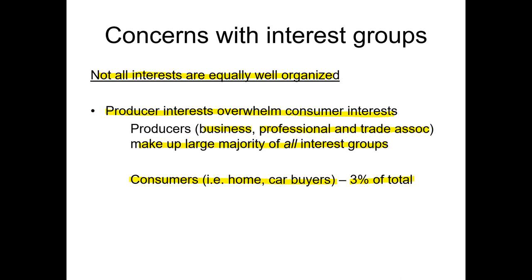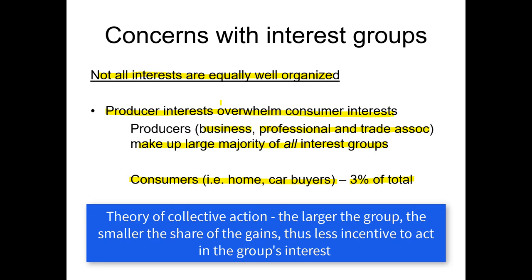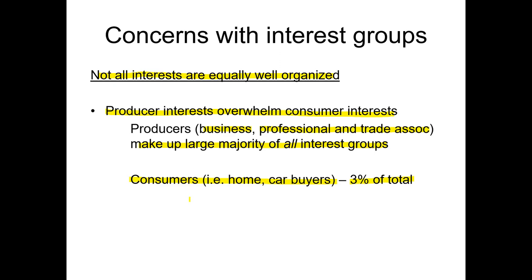There's not as much incentive for consumers to get together, just as there's not much incentive for middle class people to form an interest group. This is what we call the theory of collective action — why smaller, more focused interests such as economic interests are more logical to come together, whereas big groups like consumers and the middle class have much less incentive to create a group, and you'd have a lot more free riders with that type of group.